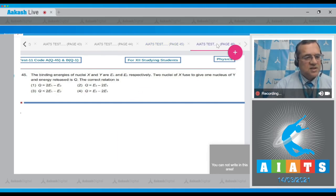Question 45: Binding energies of nucleus X and Y are E₁ and E₂ respectively. Two nuclei of X fuse to give one nucleus Y and energy released is Q. Find the correct relation. Two X nuclei combine to give Y, releasing energy. Since Y has more binding energy, the energy released equals the binding energy of Y minus the binding energy of 2X.